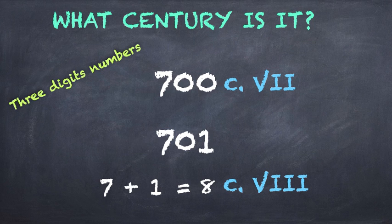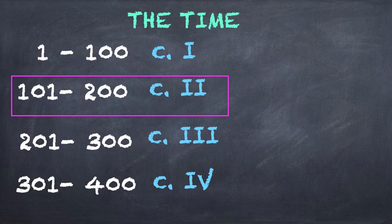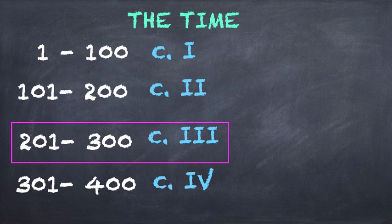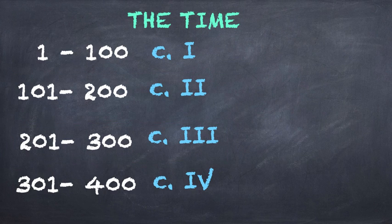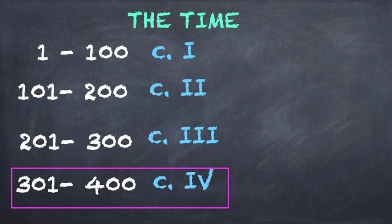Remember what we said before. From 101 to 200 is the second century and on and on. So that's why 700 is still the seventh century.